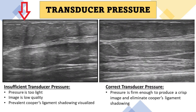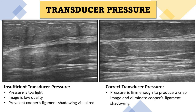In the first image, insufficient transducer pressure is being applied — since the pressure is too light, image quality is low and you can see lots of Cooper's ligament shadowing throughout the image. In the next image, the correct transducer pressure is being applied; the pressure is firm enough to produce a crisp, high-resolution image and also eliminate Cooper's ligament shadowing. One of the most important things I tell new sonographers is: don't be afraid to push. The patient is there to get a high quality diagnostic study, and you want to make sure you're doing everything you can to get the best images.